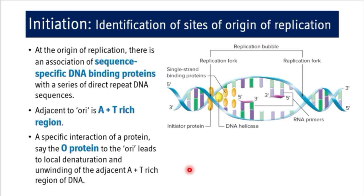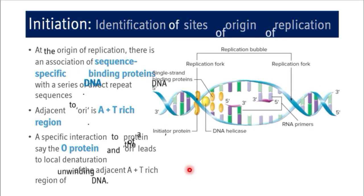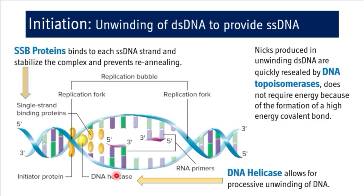The second step is unwinding of double-stranded DNA to provide single-stranded DNA. There is a proper sequence of events leading to this unwinding so that single-stranded DNA is produced for replication. The nicks produced due to local denaturation and unwinding from O protein association cause torsional strain, leading to coiling and supercoiling of DNA, which would affect the replication process.